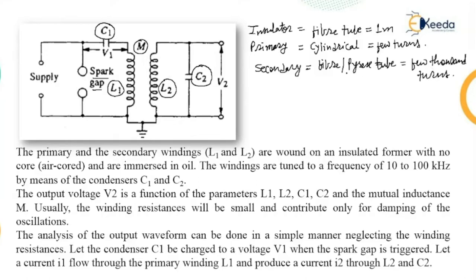The whole assembly is immersed in oil — both windings are immersed in oil under certain pressure — with separate bushings taken out for the primary and secondary windings. The primary winding is supplied through a high voltage capacitor rectifier unit rated for 10 kilovolt to 50 kilovolt and more, and the power rating of the transformer is 10 kVA or more. The output voltage V2 is a function of the parameters L1, L2, C1, C2, and the mutual inductance M.